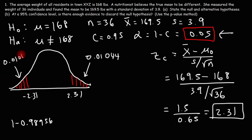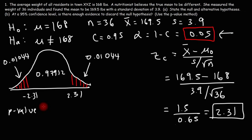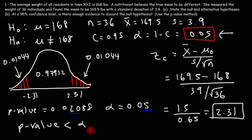By symmetry, the left-tail area is also 0.01044. The p-value is the sum of both tail areas: 0.01044 times 2, which equals 0.02088. Comparing this to alpha of 0.05, we see that 0.02088 is less than 0.05, so our p-value is less than alpha. Therefore, we reject the null hypothesis.